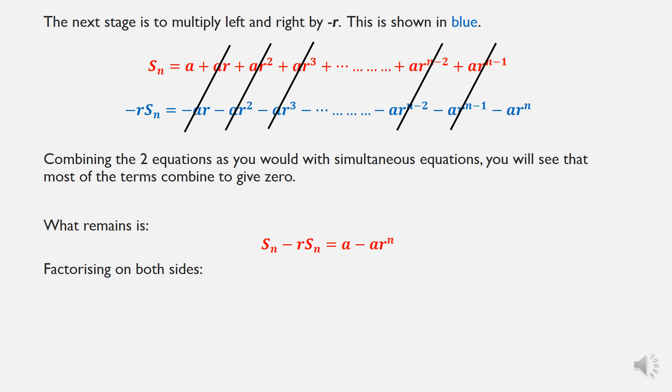Now, if we factorize on both sides, look for a common factor. On the left, the common factor is sn, and on the right, the common factor is a. So take those outside the bracket, you have sn by 1 minus r equals a by 1 minus r to the power of n. So we're almost there. If we divide left and right by 1 minus r, we arrived at our sn formula. So you may have to rewind that many times, and go back and get a blank piece of paper and see how far you get each time.